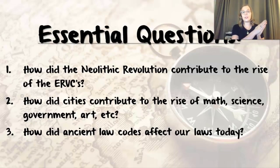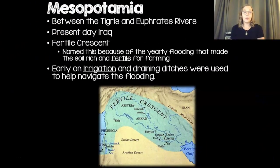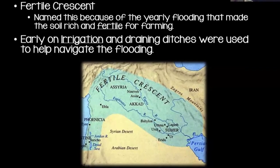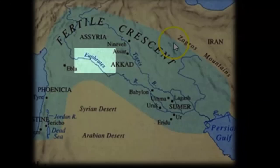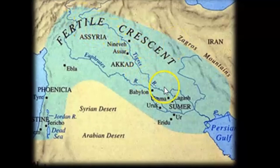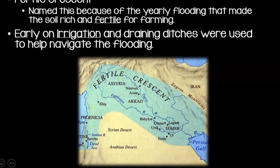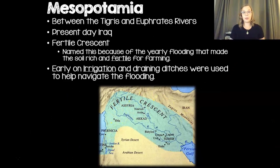We're going to see some progression from this first law code we'll talk about today, connecting all the way to what we have in modern day. So Mesopotamia is a word that literally means 'between two rivers.' That's where this civilization gets its name because it's located between the Tigris and the Euphrates rivers. And another name for this area is the Fertile Crescent.